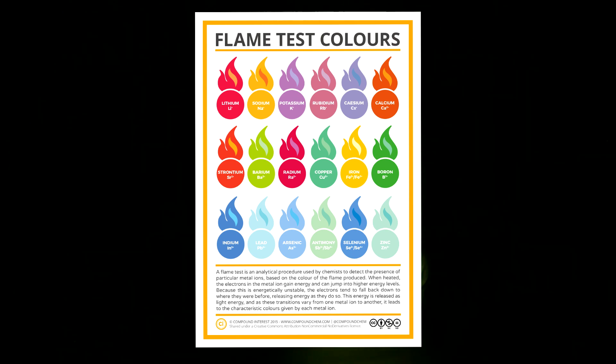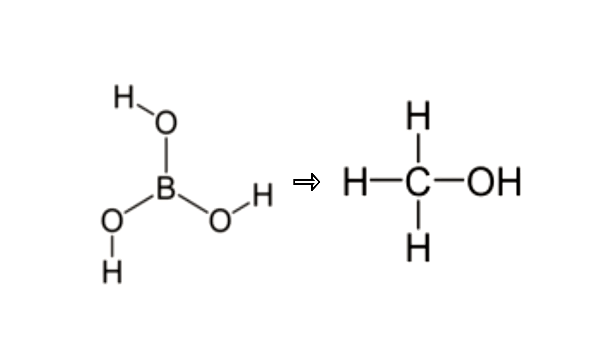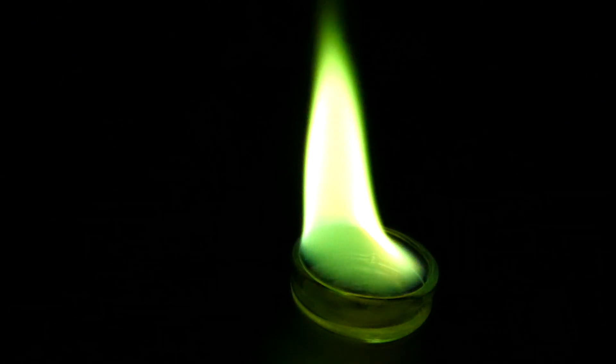You just need to pick your metal ion then decide which of its salts dissolves in the flammable solvent you want to use, dissolve it, ignite it and voila you get your pretty colored flame.